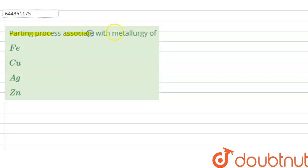parting process associate with metallurgy of iron, copper, silver, or zinc. So in this question we have to tell that parting process associate with the metallurgy of which metal. Here four metals are given: first one is iron, second one is copper, third one is silver, and fourth one is zinc. Now we will discuss parting